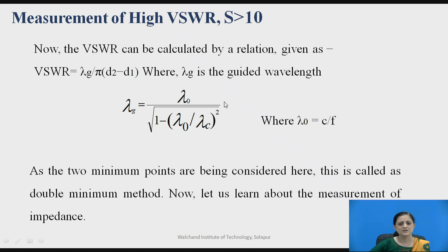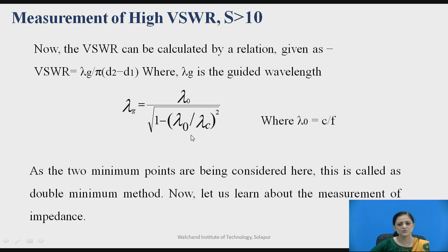Lambda G is calculated using this formula, where lambda C is calculated by twice of A, where A is the wider dimension of the waveguide — it has a fixed value equal to 22.8 mm. By putting all these values, you can easily find out lambda G, and the lambda G value can be put in the equation to find out the VSWR. Thus, the VSWR can be measured.